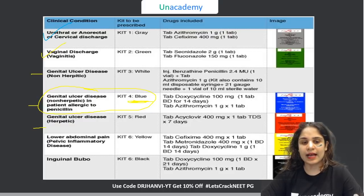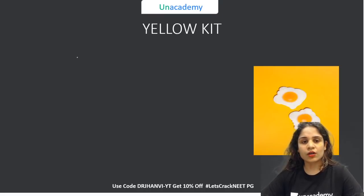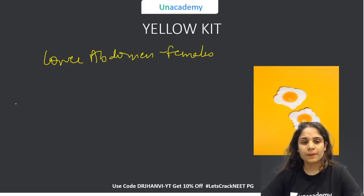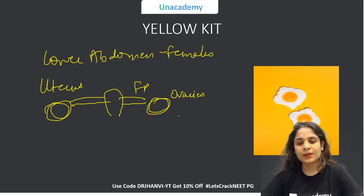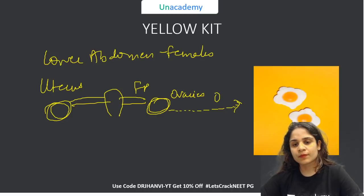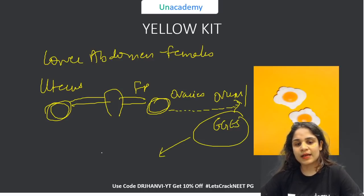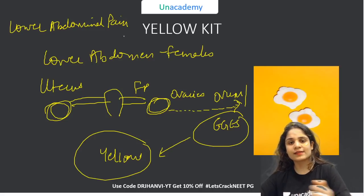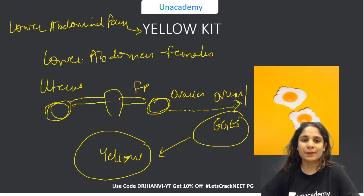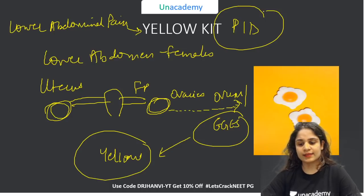Next is the yellow kit for lower abdominal pain. Think about what is in the lower abdomen of females — the uterus, fallopian tubes, and ovaries. The ovaries produce ovum, also called eggs, and eggs are yellow in color. So for lower abdominal pain — where the ovaries are producing eggs — you look for the yellow kit. Remember, lower abdominal pain in this context is typically the presentation of pelvic inflammatory disease.